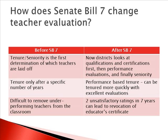Now, after Senate Bill 7, districts are looking at qualifications and certifications first, then performance evaluations, and finally seniority. Before Senate Bill 7, teachers were only allowed tenure after a specific number of years. After Senate Bill 7, tenure can be performance-based and a teacher can be tenured more quickly with excellent evaluations. In addition, before Senate Bill 7, it was often difficult to remove underperforming teachers from the classroom. After Senate Bill 7, two unsatisfactory ratings in seven years can lead to the suspension or revocation of an educator's certificate.